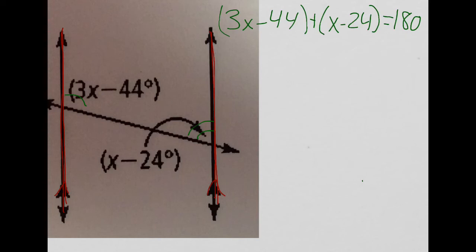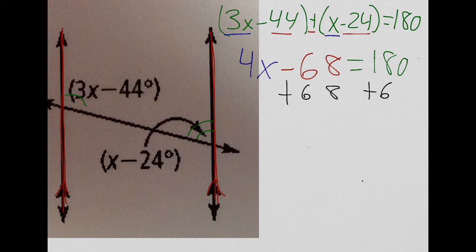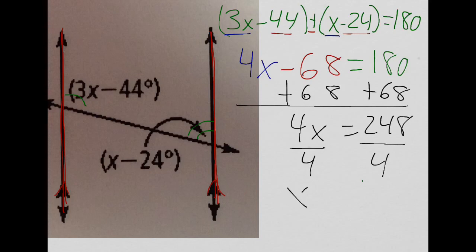I'm going to combine like terms. So 3x plus x, that's going to give me 4x, and negative 44 plus negative 24 is going to give me negative 68 equals 180 degrees. Now I'm going to add 68 to both sides, plus 68, and I get 4x equals 248. Now I can divide both sides by 4, and I get that x equals 62. There's my answer.